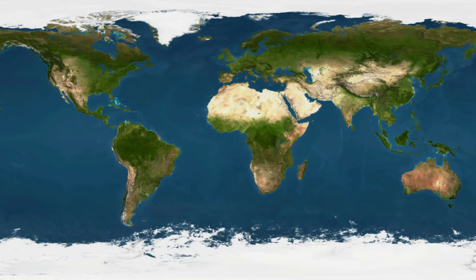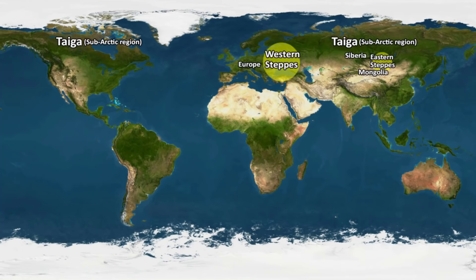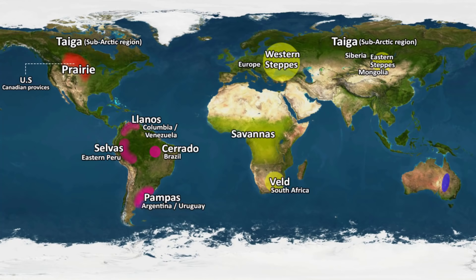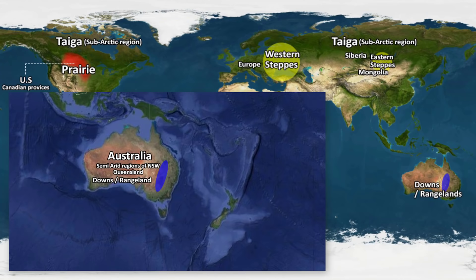Grasslands are known by different names in different parts of the world. In Northern Asia and Europe, it is called steppes or taiga. In North America, it is called prairies. In South America, it is called pampas, salvas, llanos, and cerrados. In Africa, they are called savannas and welts. In Australia, they are called rangelands or dons. In New Zealand, it is called Canterbury.